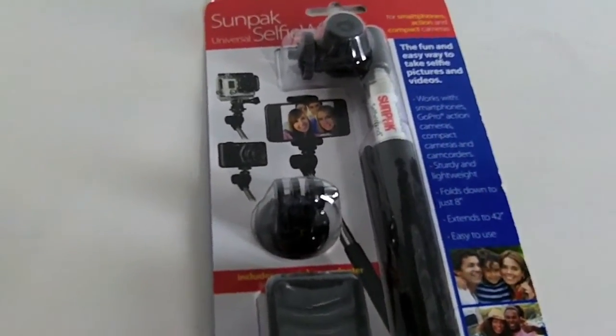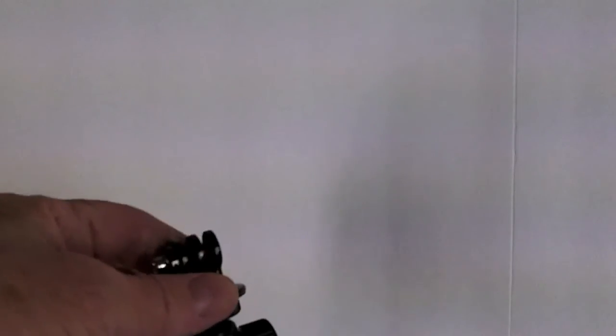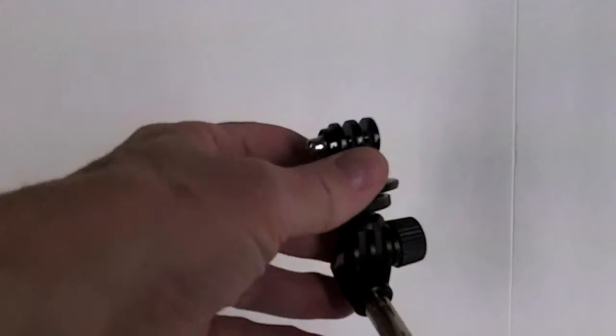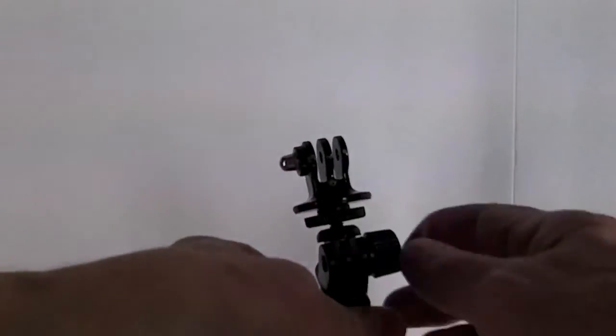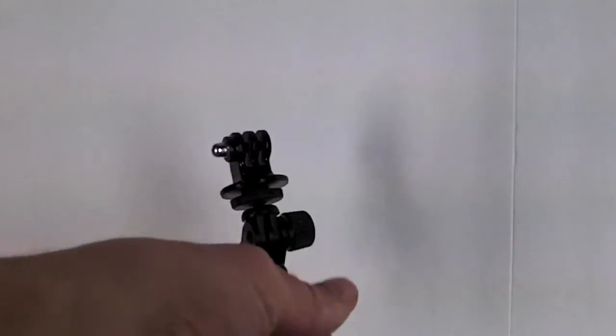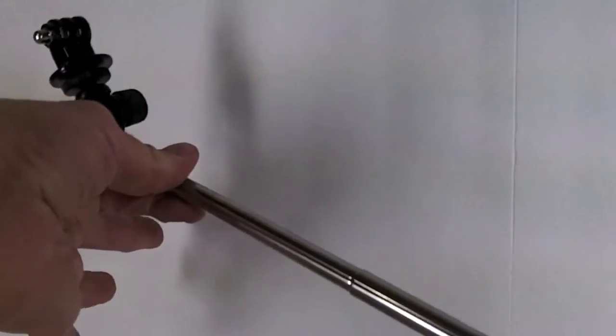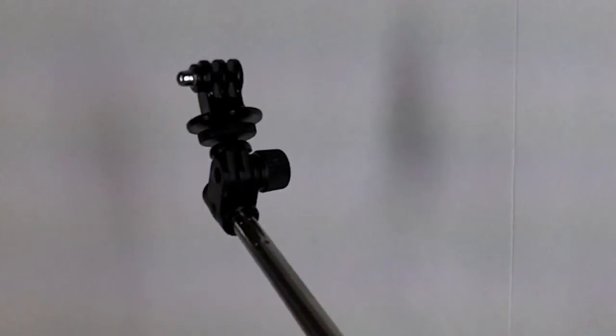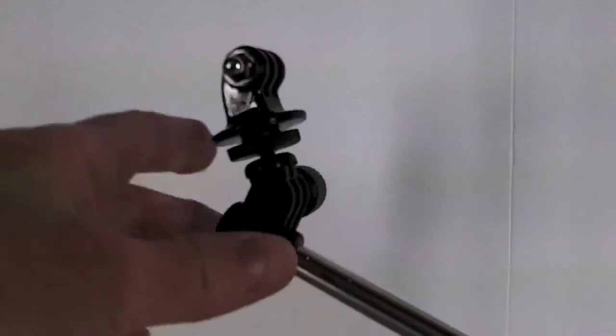Here I've mounted the action camera mount on here and this knob tightens things up and you can adjust it to where you want, tighten that up, and you can extend it. It'll extend all the way out 42 inches. I don't know if you need it that long.